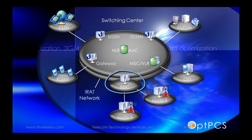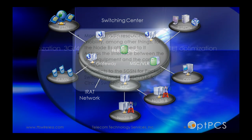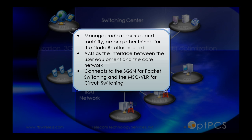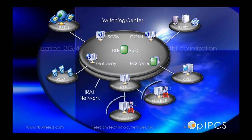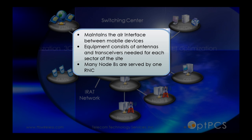The Radio Network Controller manages radio resources and mobility, among other things, for the Node Bs attached to it. It acts as the interface between the user equipment and the core network, and connects to the SGSN for packet switching and the MSC VLR for circuit switching. Node B maintains the air interface between the mobile devices. The equipment consists of antennas and transceivers needed for each sector of the site, and many Node Bs are served by one RNC.